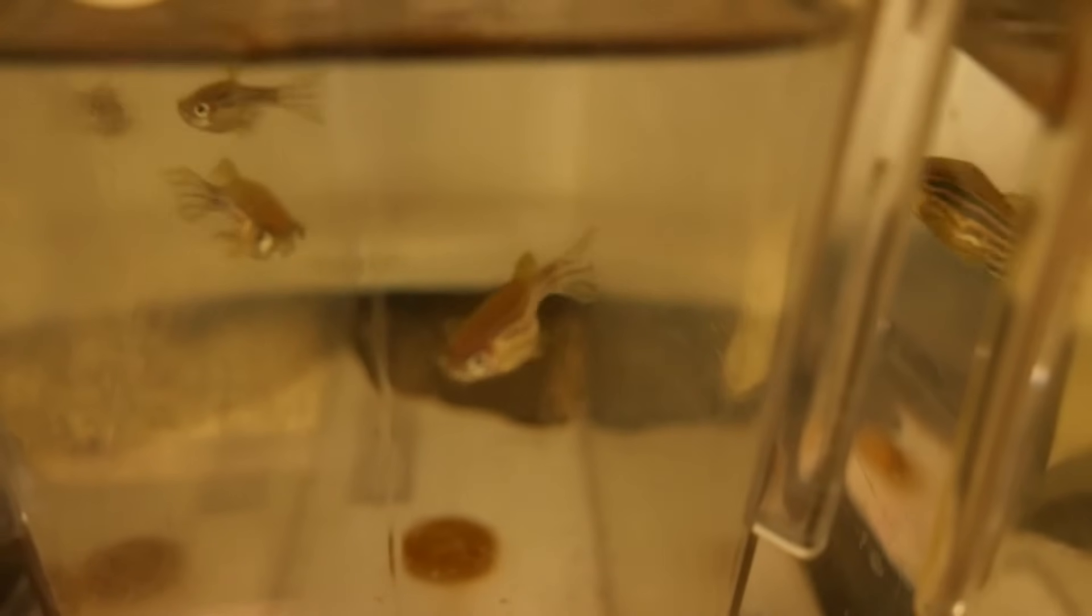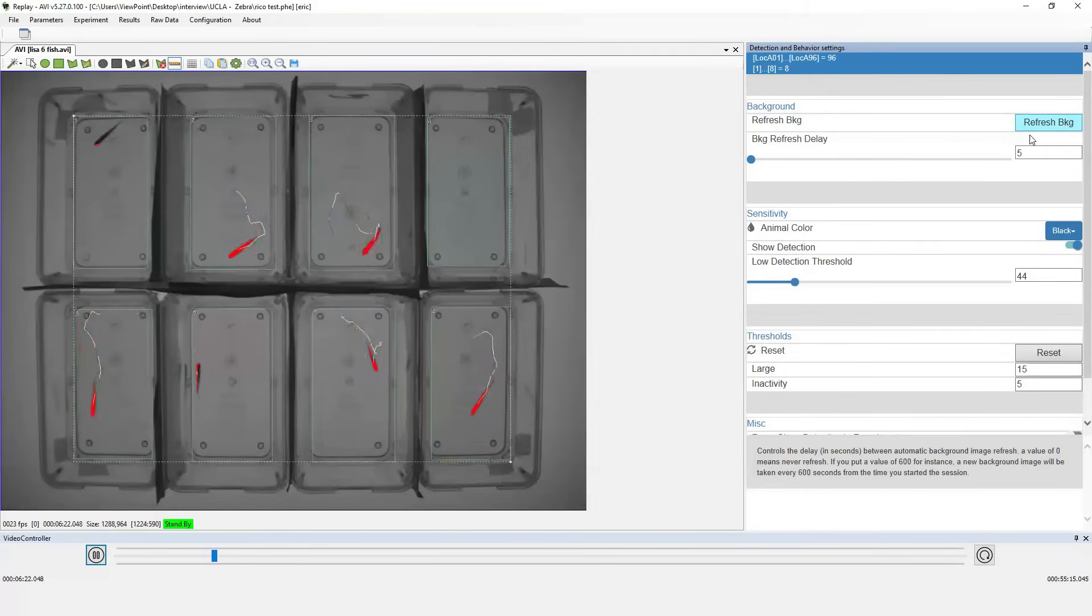One big change for us is the ability to monitor adults. We previously weren't able to track fish over the age of about seven days, and so we now are able to use it up to two and a half year old fish.